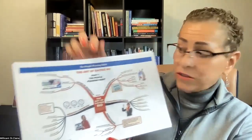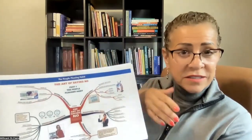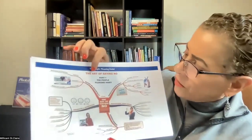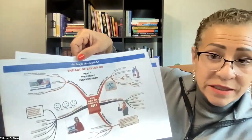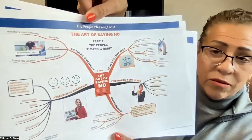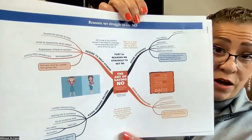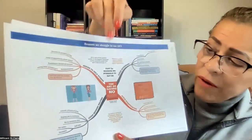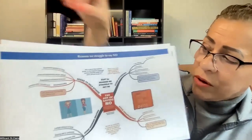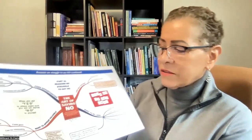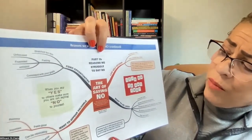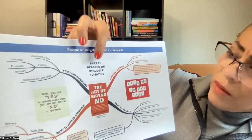Here's the series of maps just on this one book so you can see how you can go deep and wide with the content. 'The Art of Saying No' — there's the people-pleasing habit. See the difference — all the details are there. And here are the reasons we struggle to say no. With the software I can use imagery and import all kinds of things to jazz them up based on the content. Then there's reasons we struggle to say no, part two — a little bit more.